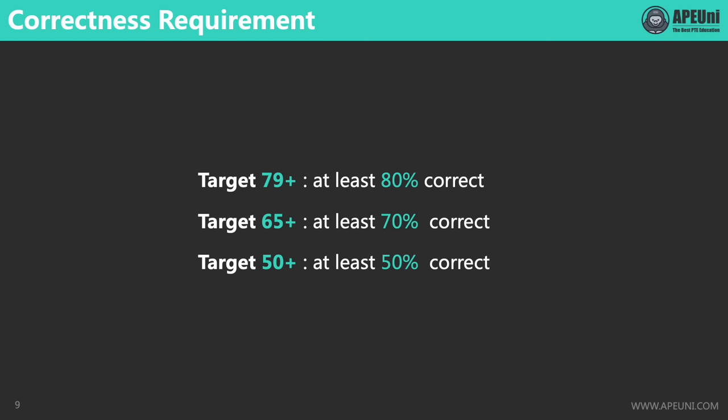Now let's take a look at the correctness requirements for different target scores. If your target score is 79 or above, try to aim for getting at least 80% of the marks in WFD — you can have at most one to two words wrong per question. If your target score is 65 or above, aim for at least 70%, meaning at most three to four words wrong. And if your target score is 50 or above, aim for at least 50% — you need to get at least half of the words correct.